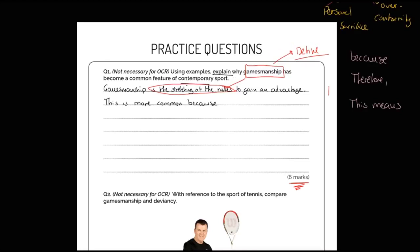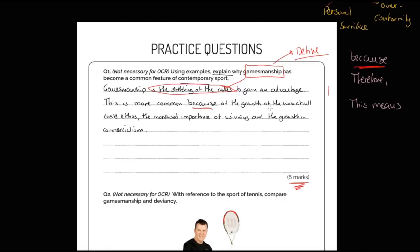Next: 'This is more common because...' - there's my explaining language. Why is it? Because of the growth of the win-at-all-costs ethic, the increased importance of winning, and the growth in commercialism. I've given reasons why - this is explaining why it's become more common. 'Therefore, the traditional ethos of sportsmanship has been diluted.' Sportsmanship has not been lost, it's just not as clear, not as common, not as consistent - so it's been diluted.